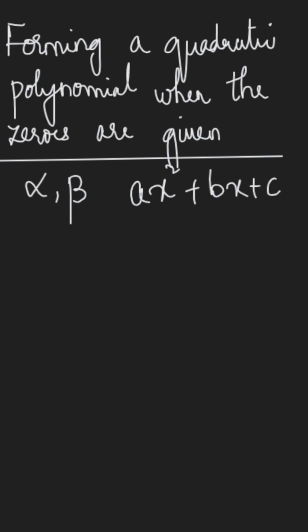then the relationship between them is given by the sum of roots or the sum of zeros, which is alpha plus beta, equal to the negative coefficient of x, which is b, divided by the coefficient of x square, that is a.